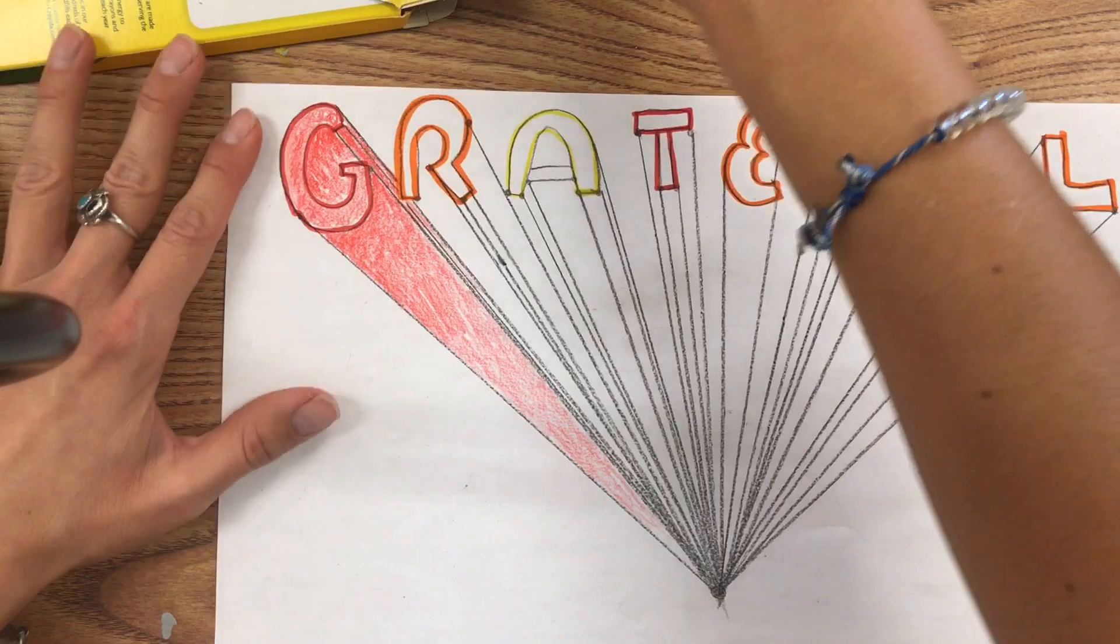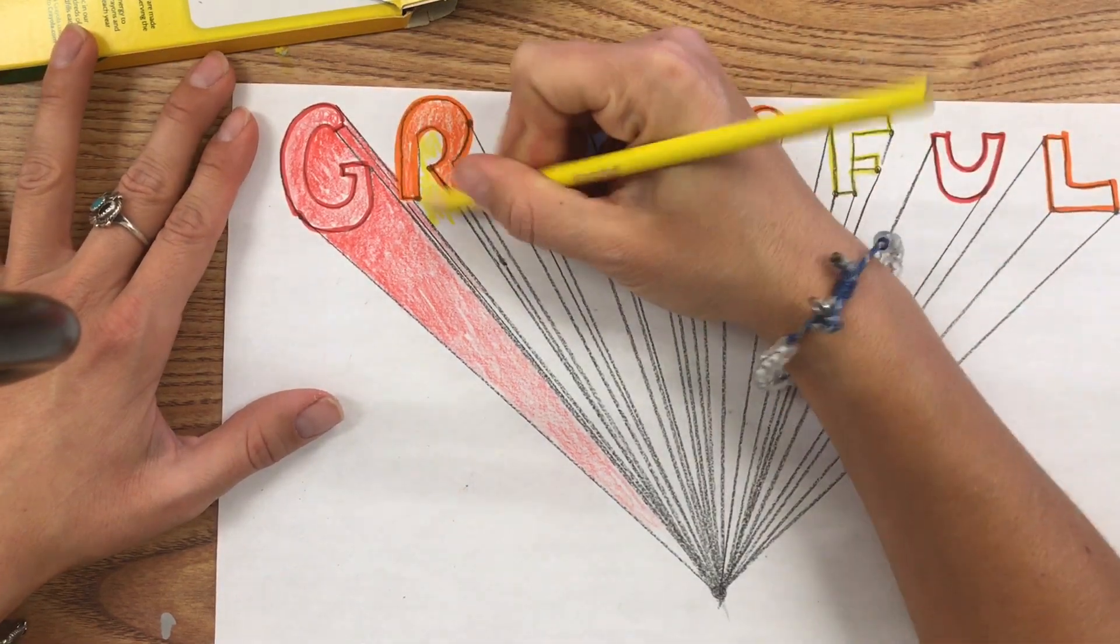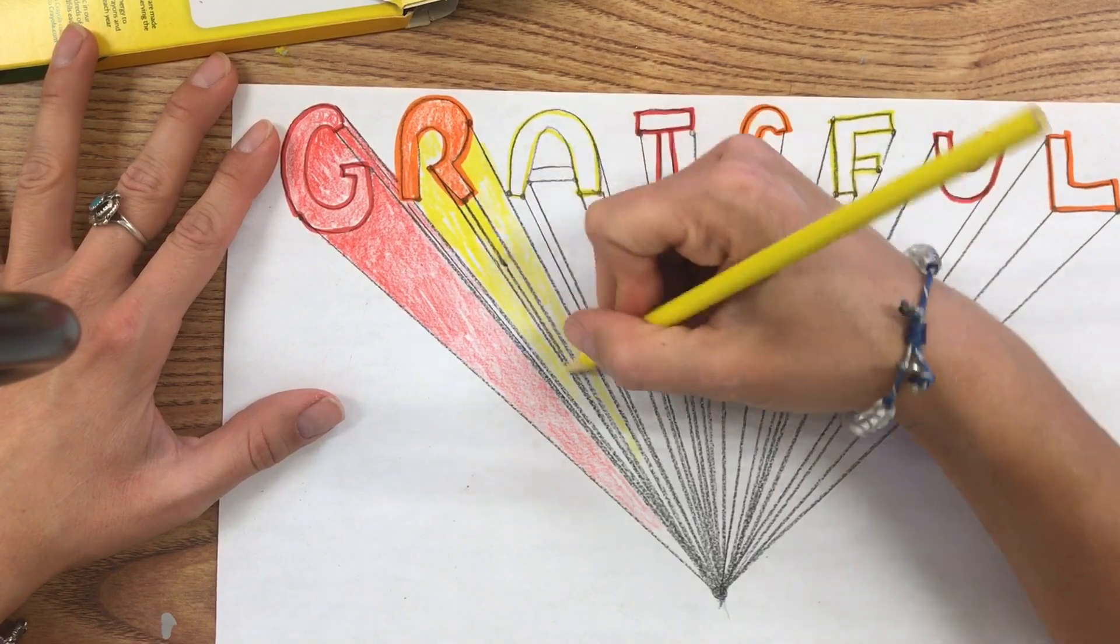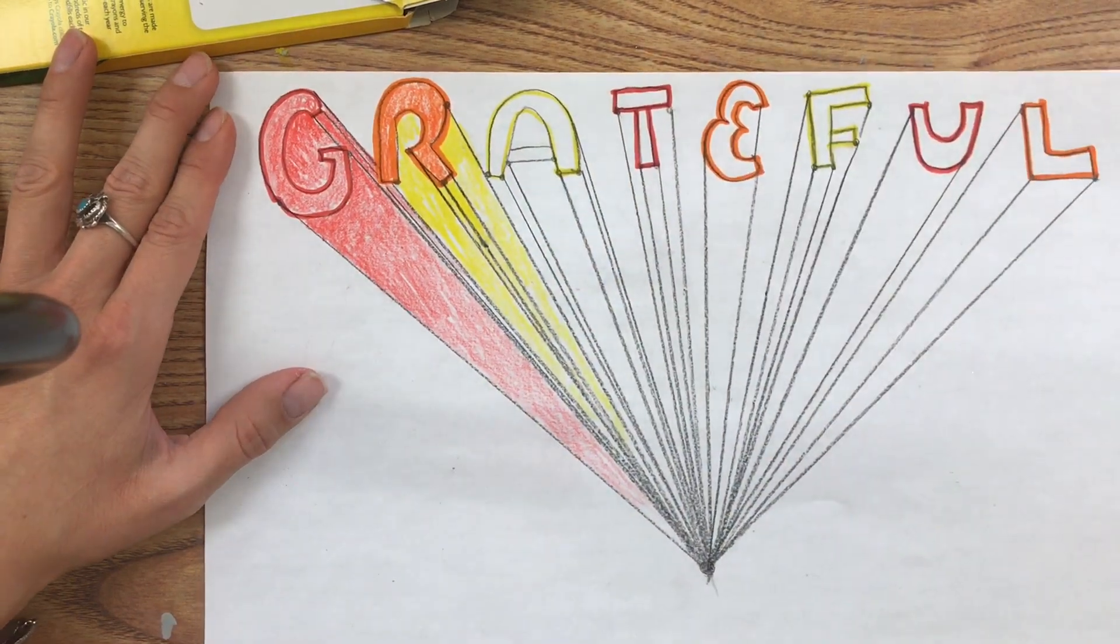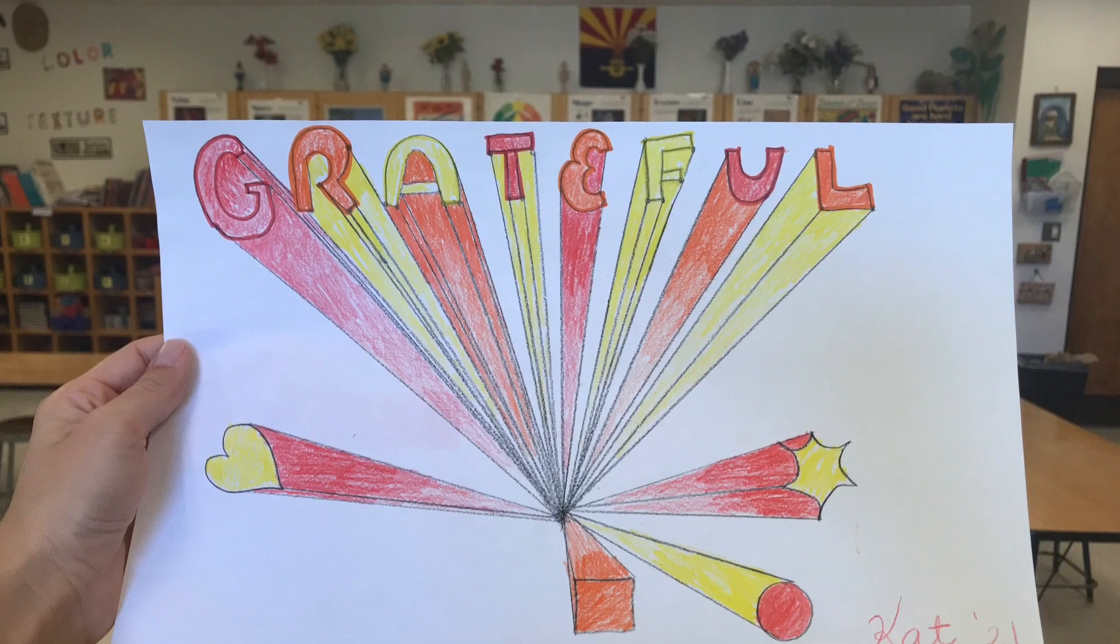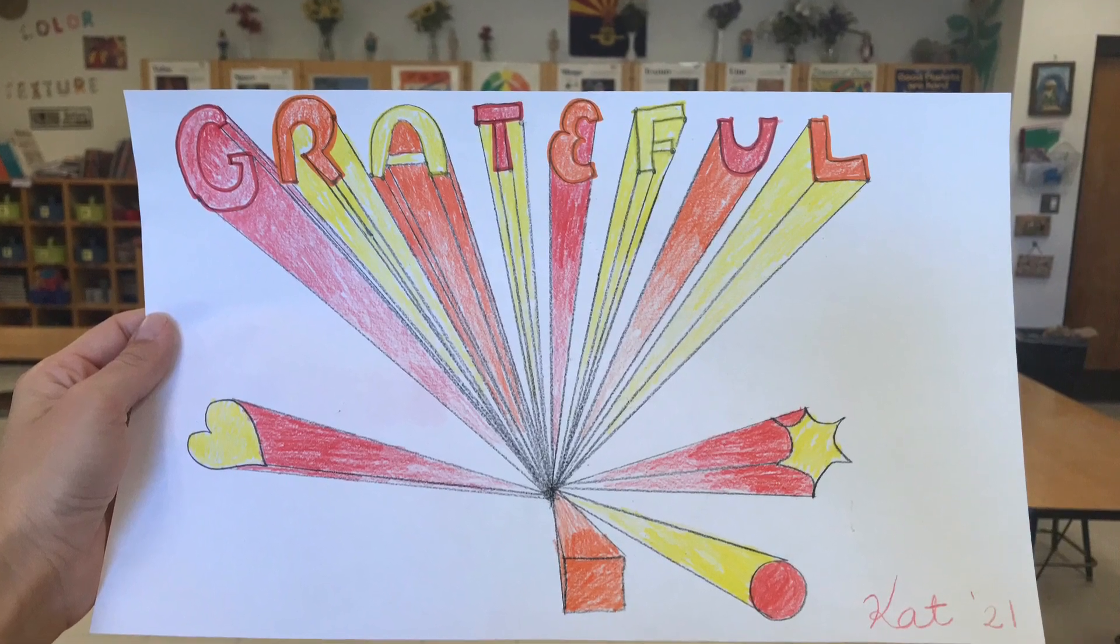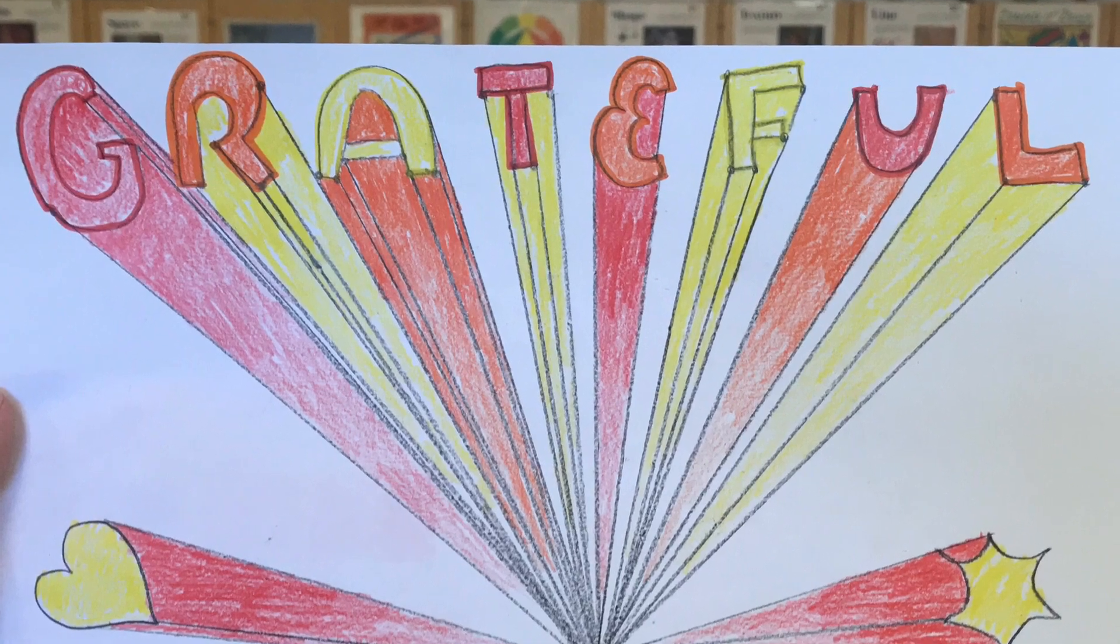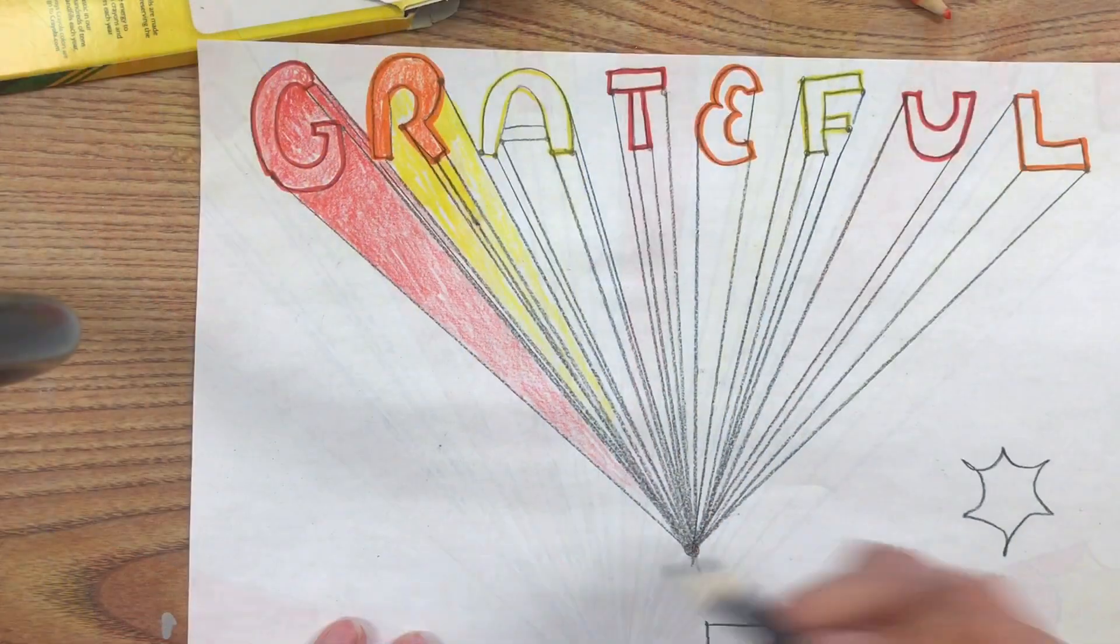You might have to go in and add a little bit more color. I decided to change it up with my pattern. This is what it ended up looking like. You can see the range and values of dark, medium, and light. You don't have to match the color if you don't want to.